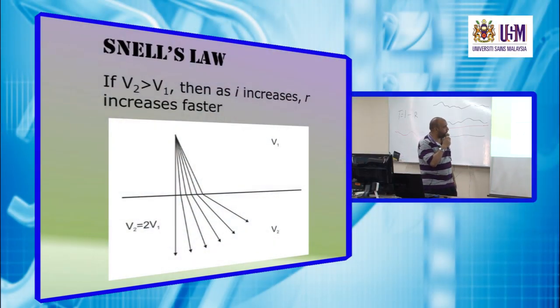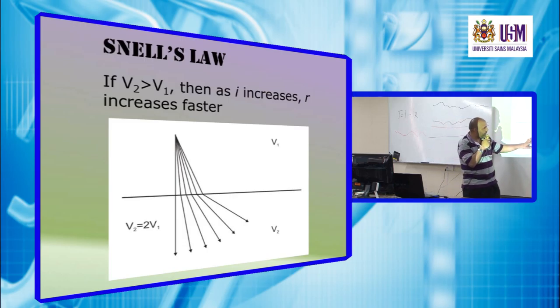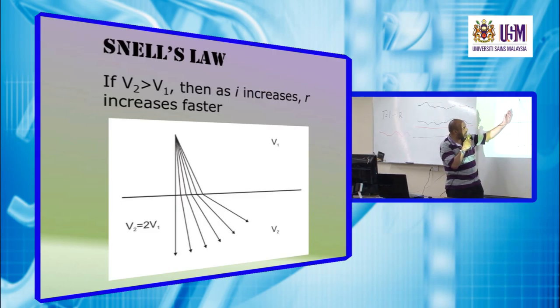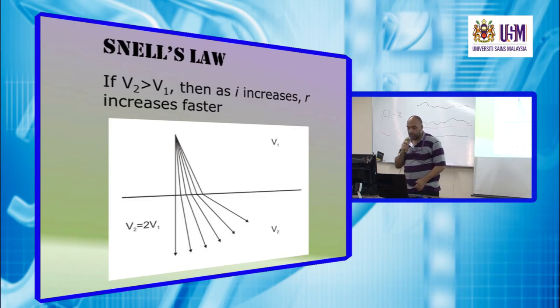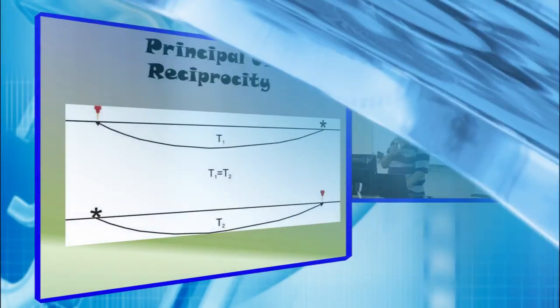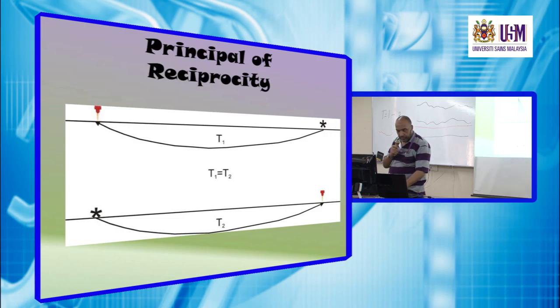And here we have what's called low velocity layer or blind because we cannot see this velocity. If we have smaller velocity layer, then this is not encountered, it's not seen completely on the seismic curve. This is our case when V2 is greater than V1. As the angle of incidence increase, the angle of refraction increase more.